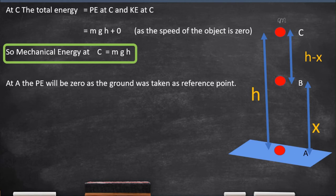Now, let us talk about the point A. As A is the point on the ground, and ground is taken as a reference point, therefore, the potential energy becomes zero, because the H value will be zero. Therefore, we have to calculate the kinetic energy at A. To calculate kinetic energy, we have to calculate the velocity.